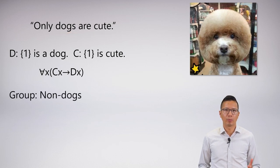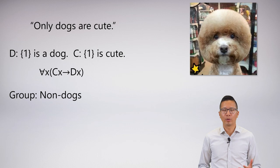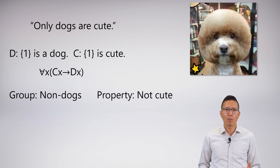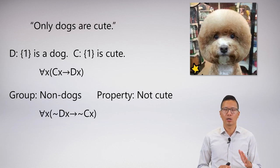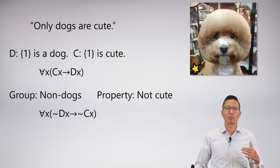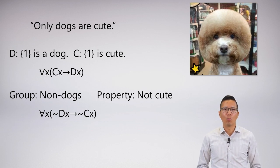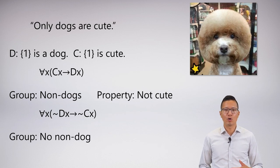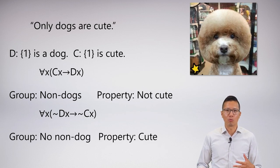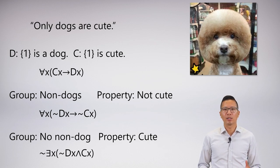Another way is that you could think the group is something different. If I say 'only dogs are cute', the group we're really talking about are things that aren't dogs. If only dogs are cute, then what is the property about everything that's not a dog? Well, the property is that they're not cute. That's also a very straightforward way of symbolizing. This is the contrapositive form. We can also say no non-dog is cute — it's not the case that there is something that is not a dog and cute. That's the same thing as saying 'only dogs are cute'.